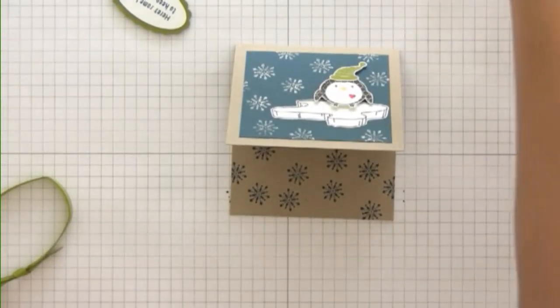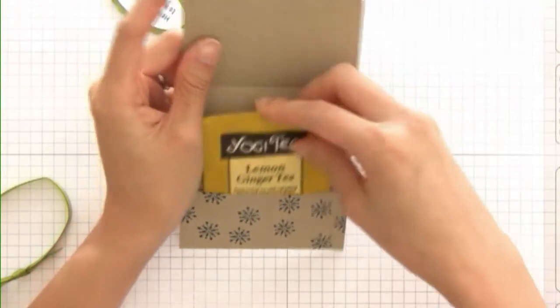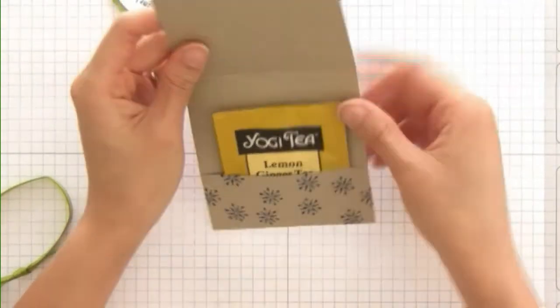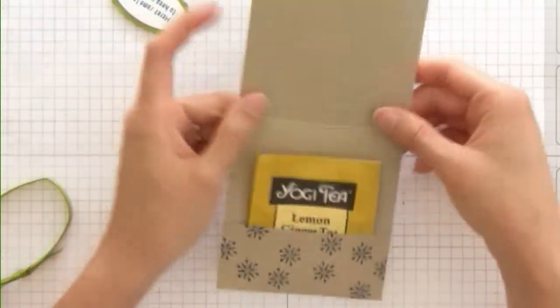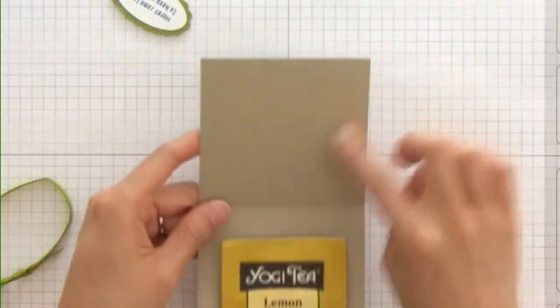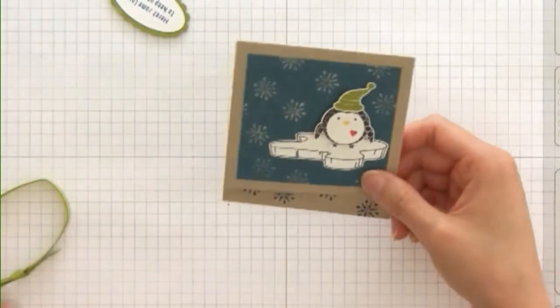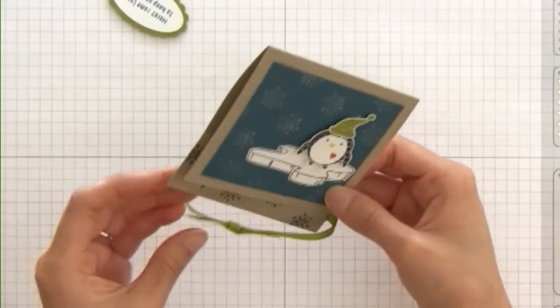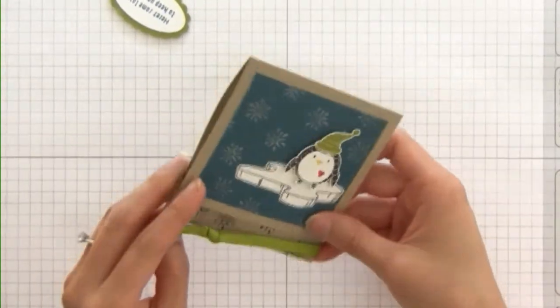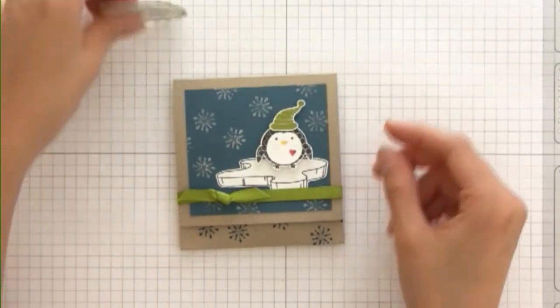I'm going to put this teabag back in there so you can see how it all comes together. If you want, you can stamp the rest of the teabag holder, but I'm just going to leave it like this. And then I'm going to slip the ribbon back on.